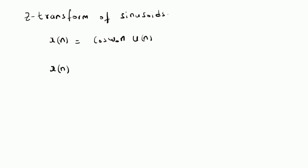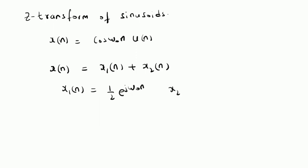We rewrite this signal X of n as X1 of n plus X2 of n, where X1 of n is 1/2 e^(j omega naught n) and X2 of n is 1/2 e^(-j omega naught n). By using Euler's formula, we are rewriting cos(omega naught n) as 1/2 times the sum of e^(j omega naught n) plus e^(-j omega naught n). To determine the overall Z-transform X(z), we need X1(z) and X2(z).